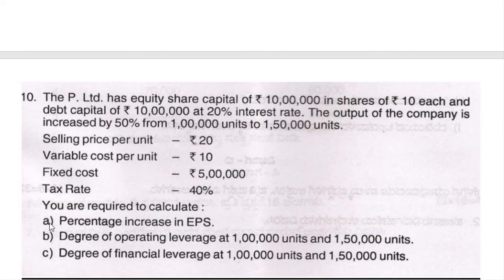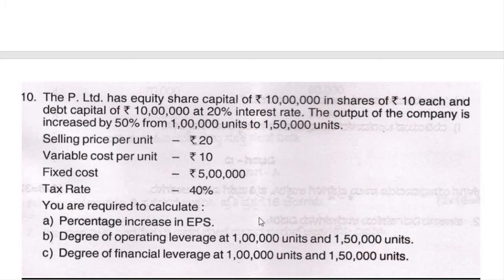The question asks us to calculate: first, the percentage increase in EPS. Before calculating the percentage increase or decrease, we first need to calculate EPS — that is, earnings per share. The formula is earnings available to equity shareholders divided by number of equity shares. We already calculated 1 lakh equity shares as 10 lakh divided by 10 rupees.